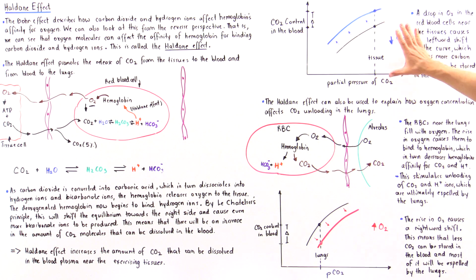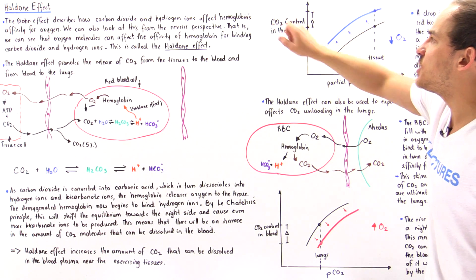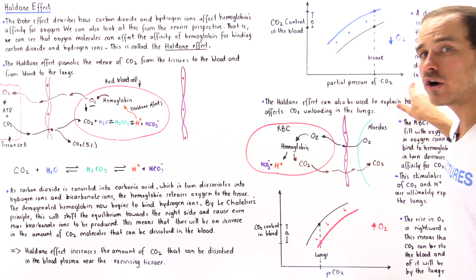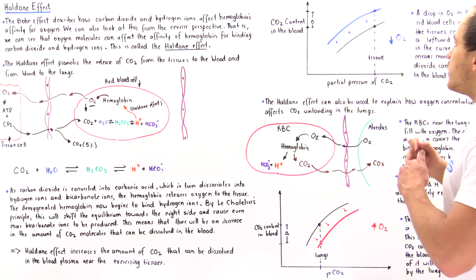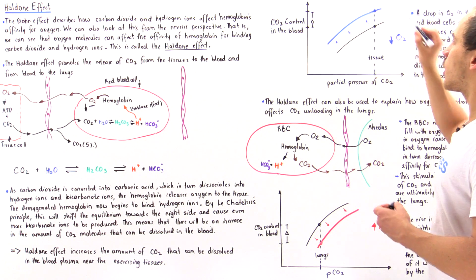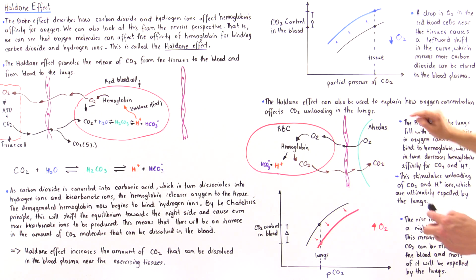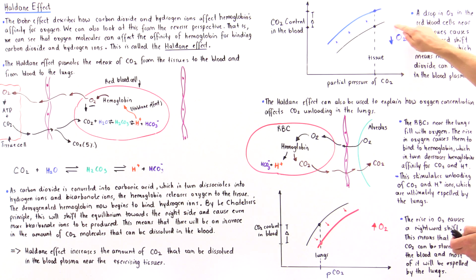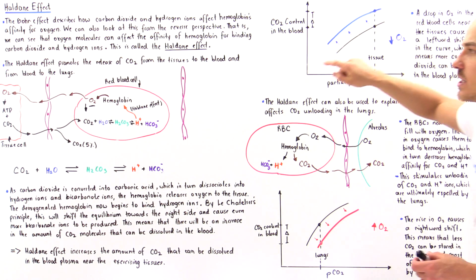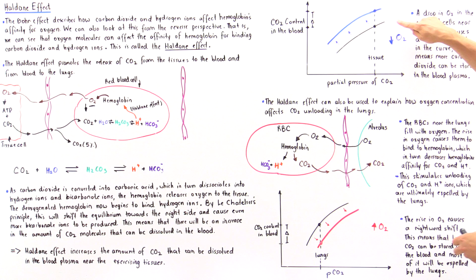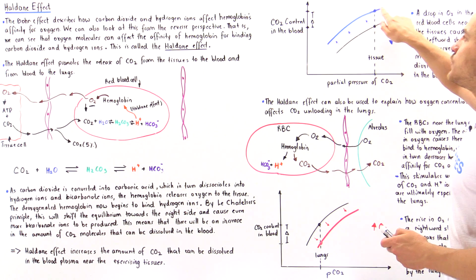We can represent this effect graphically. The y-axis is the CO2 content dissolved in the blood, and the x-axis is the partial pressure of carbon dioxide in the blood. The black curve describes how much carbon dioxide we can dissolve in the blood at a given partial pressure. As we decrease the concentration of oxygen inside the red blood cell, the Haldane Effect causes a leftward shift in this curve, moving it to the blue position.